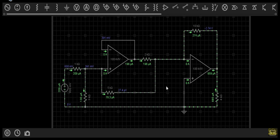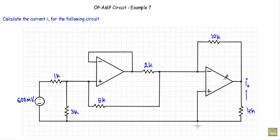Now look at this circuit. If I denote this op-amp as op-amp 1 and this op-amp as op-amp 2, the output of op-amp 1 is applied at the inverting terminal of op-amp 2. This kind of op-amp structure is known as a cascaded op-amp.